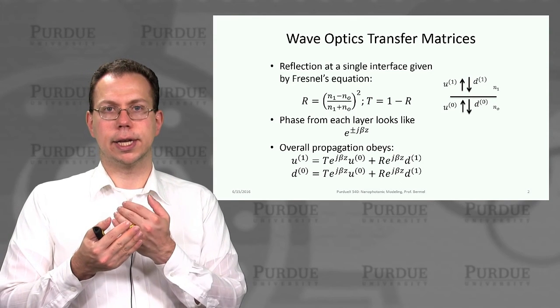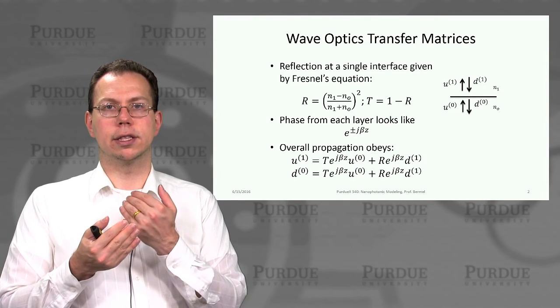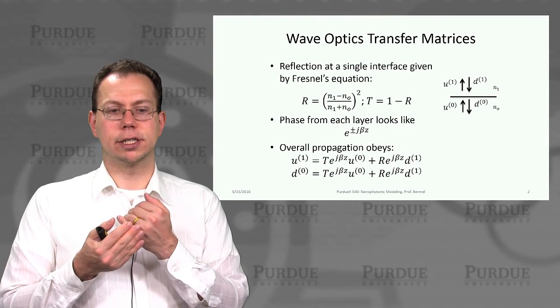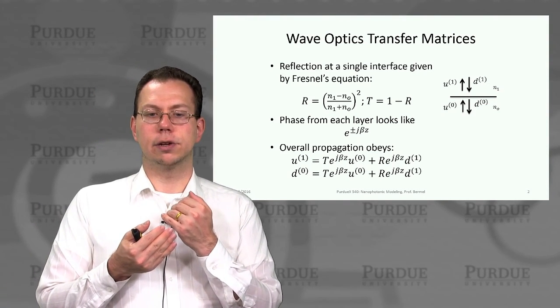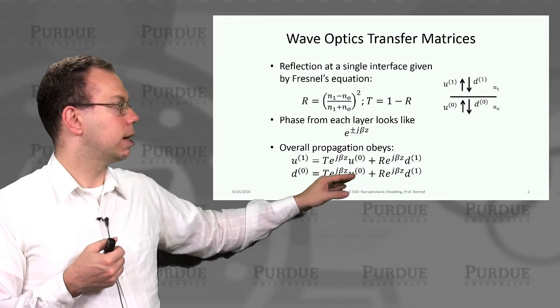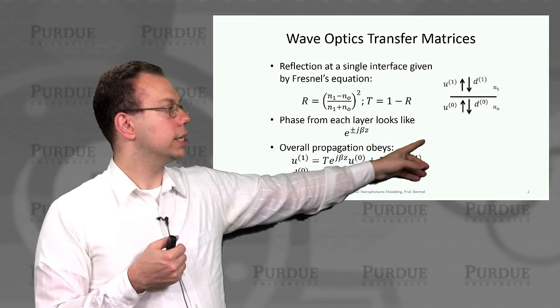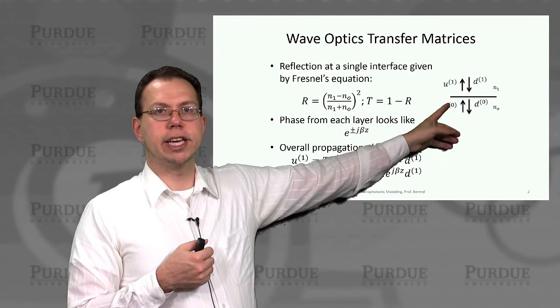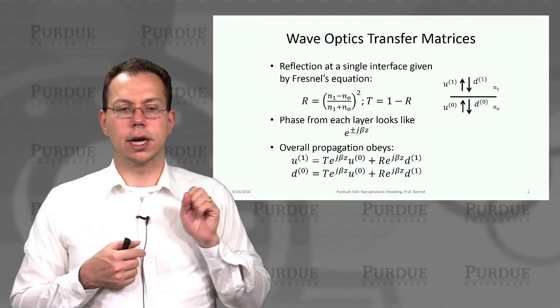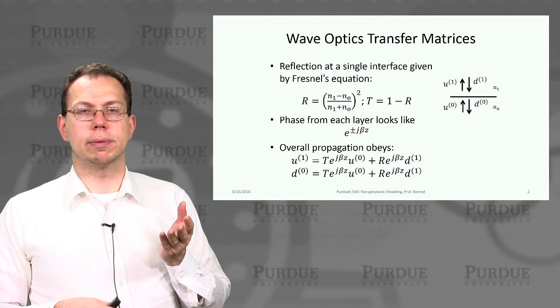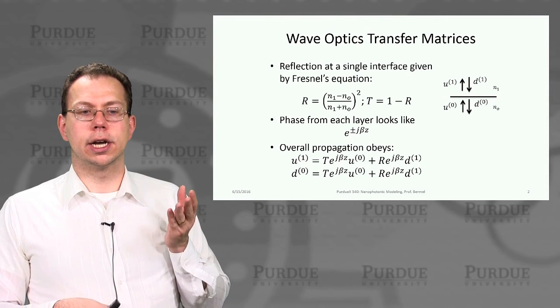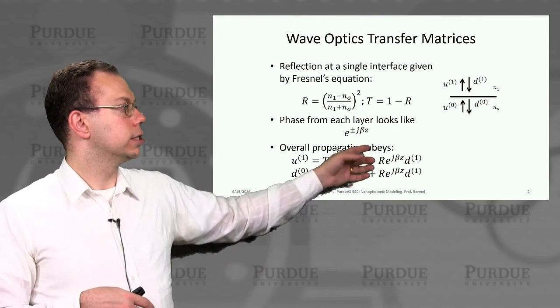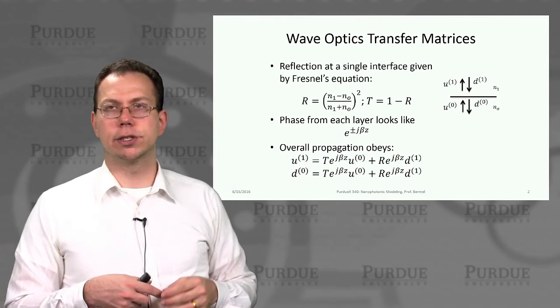And also, the second thing that's important is not only the absolute power reflection, but also there's a phase that has to be considered. So basically when the light is propagating, as you can see here in this direction, it picks up a phase, and the phase has a sign associated with the propagation, which is either beta z or minus beta z. And so we write this as a complex exponential, that phase.